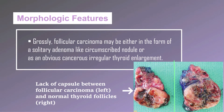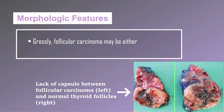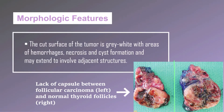Grossly, follicular carcinoma may be either in the form of a solitary adenoma-like circumscribed nodule or as an obvious cancerous irregular thyroid enlargement. The cut surface of the tumor is gray-white with areas of hemorrhage, necrosis, and cyst formation, and may extend to involve adjacent structures.